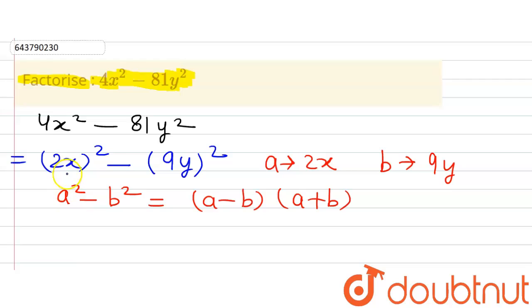Because a is 2x and b is 9y, using this identity, we can write this as a minus b, that is 2x minus 9y, multiplied by a plus b, that is 2x plus 9y.